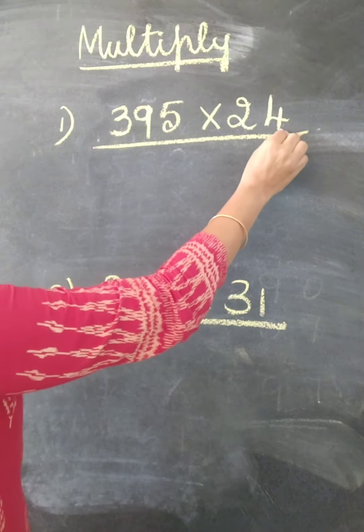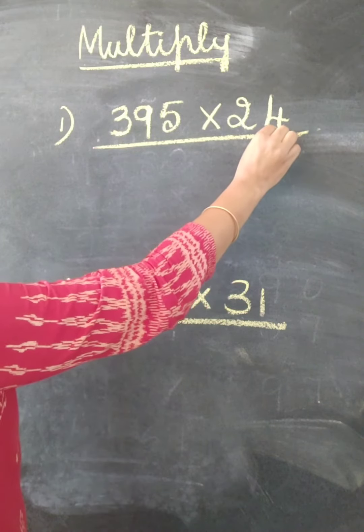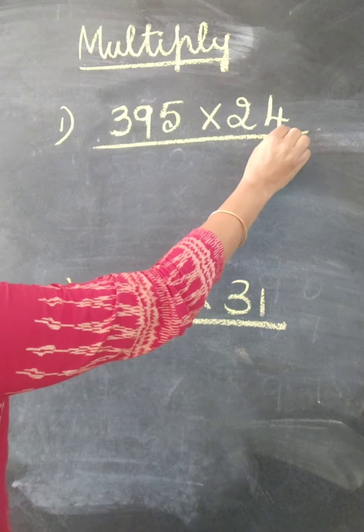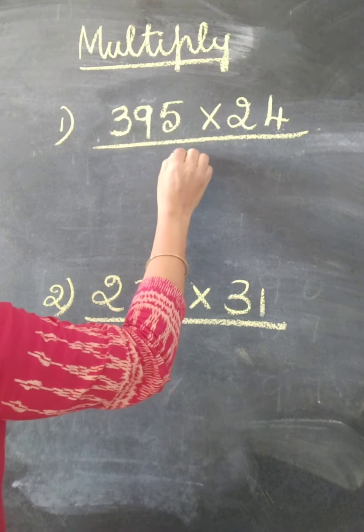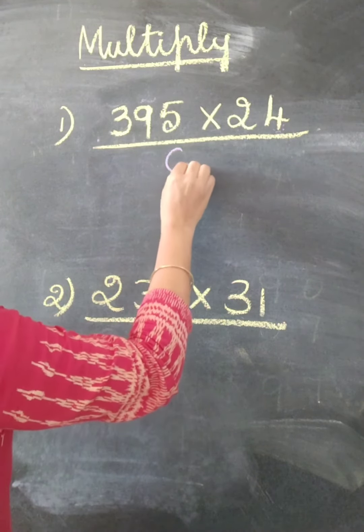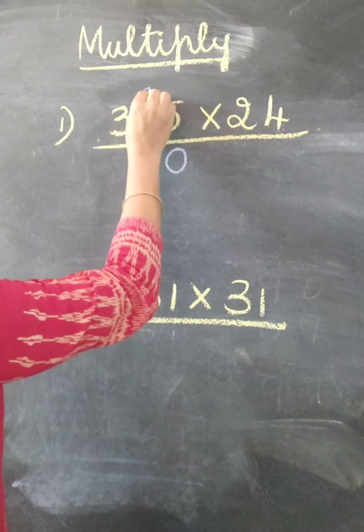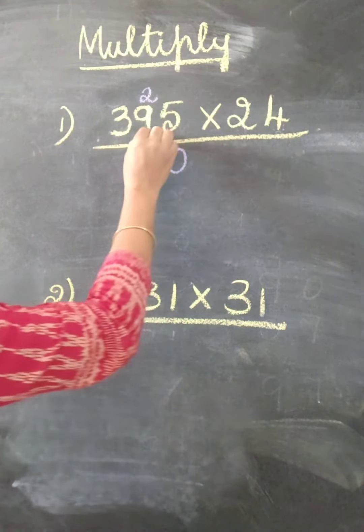We will start to multiply by this number, 4. 4 times 5 is 20. Write 0 here, 2 you may write here. 4 times 9.